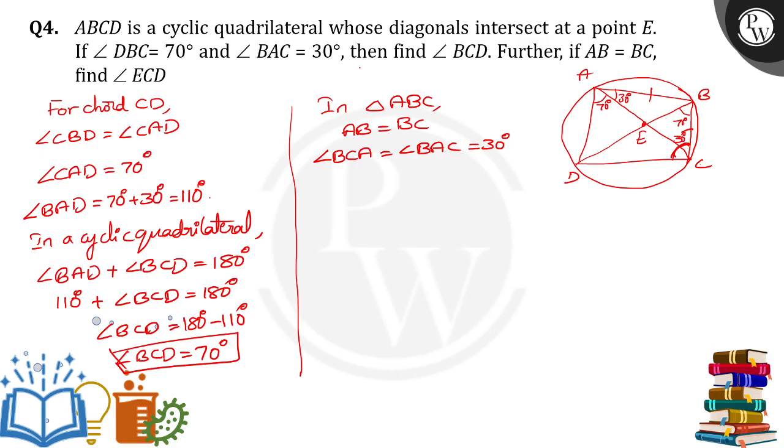So, what we need to find now? We have to find out ECD. Here, angle ECD is equal to angle BCD minus angle BCA. So, that is equal to 70 degrees.